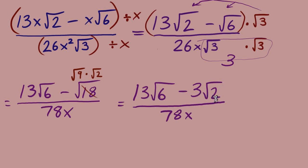Our result is 13 radical 6 minus 3 radical 2 over 78x. Lastly, can we simplify the fraction? Our radicals are fully simplified, but can we evenly divide out of all three terms looking at the numbers out front? The 78 is a multiple of 3, but 13 — we cannot divide 3 out from there. So we cannot simplify the fraction. The radicals are done, the denominator is rationalized, and we are finished.